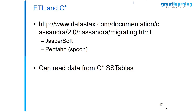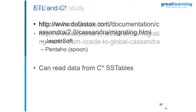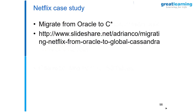Have you heard of an architectural style called Lambda? Not AWS Lambda — that is serverless architecture. There's a Netflix case study here: from Oracle to global Cassandra. They used to use Oracle and eventually moved to Cassandra. A very close friend of mine went through the same thing at eBay — eBay was using Oracle and over time moved over to Cassandra. People are moving over to masterless architecture.